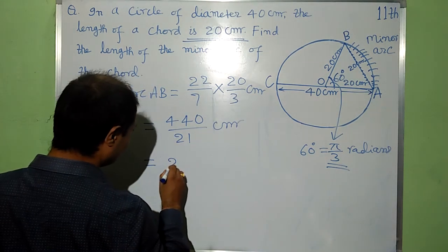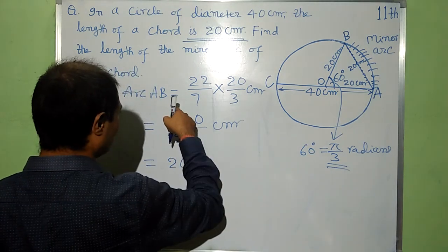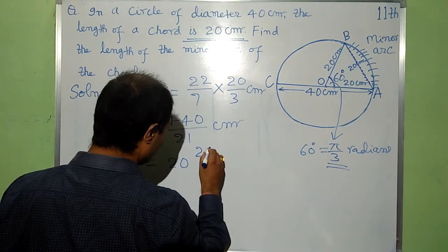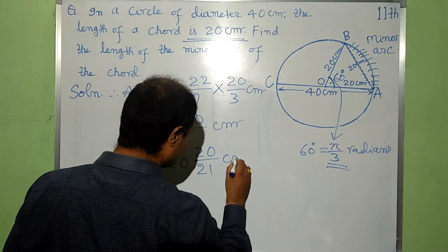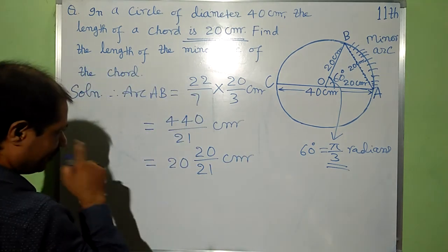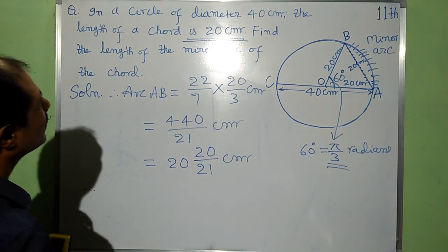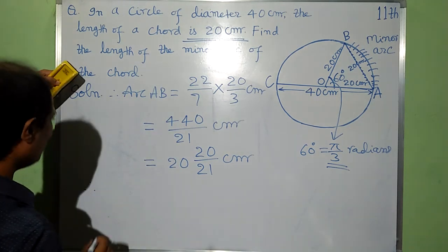Hence, the length of the minor arc of the chord is 440 by 21 cm, which is 20 and 20 by 21 cm.